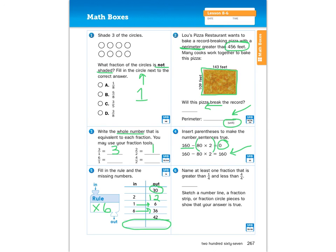Number six, name at least one fraction that is greater than 1 fourth and less than 4 fourths. And then you can go ahead and you can show on a number line, fraction strip, or fraction circle, that your answer is true.